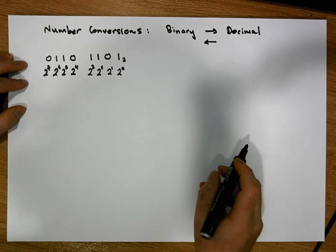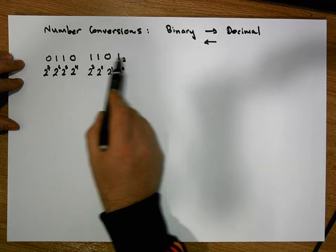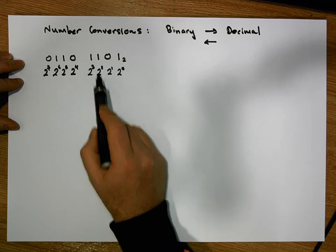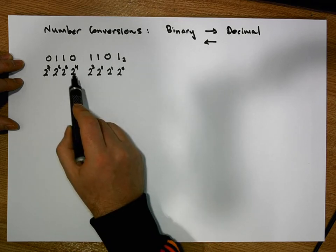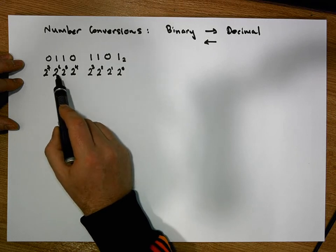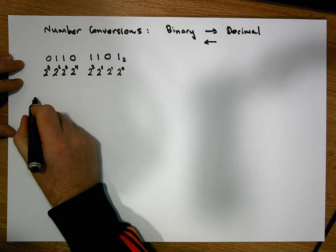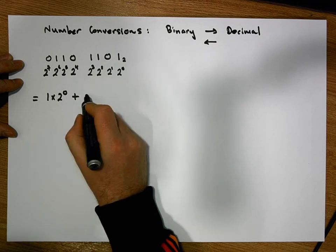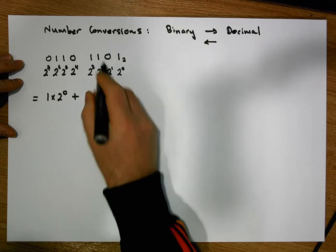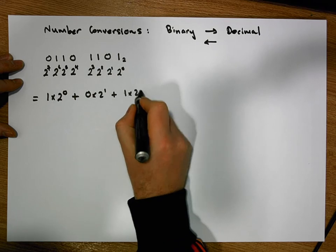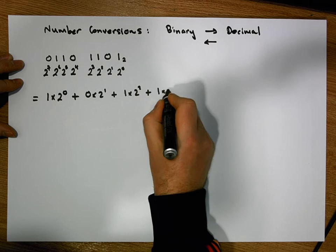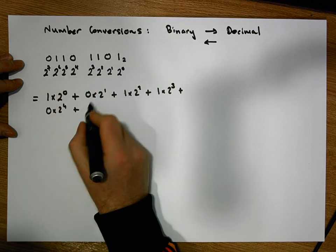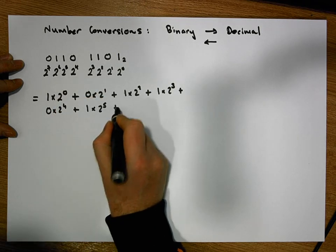So for our binary number, we have: one 2 to the power of 0, zero 2 to the power of 1, one 2 to the power of 2, one 2 to the power of 3, zero 2 to the power of 4, one 2 to the power of 5, one 2 to the power of 6, and zero 2 to the power of 7.